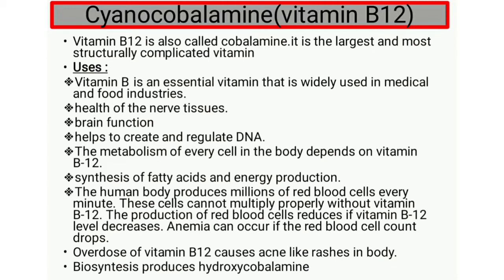The human body produces millions of RBC every minute. The synthesis and production of RBC depends upon vitamin B12. The production of RBC reduces if the vitamin B12 level decreases. If the RBC cell count decreases, it causes anemia.